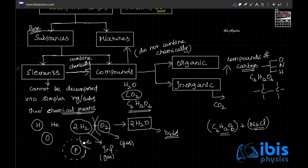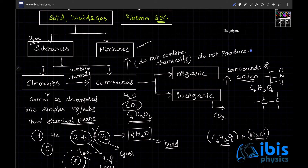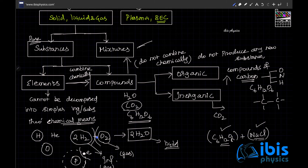This mixture of sugar and salt can always be separated through physical means. Mixtures do not produce any new substances, so they retain their properties — sugar retains its property and salt retains its property. One granule of sugar is still sugar and one granule of salt is still salt. They never combine to produce a new substance the way hydrogen combines with oxygen to form water. This is just a physical mixture.